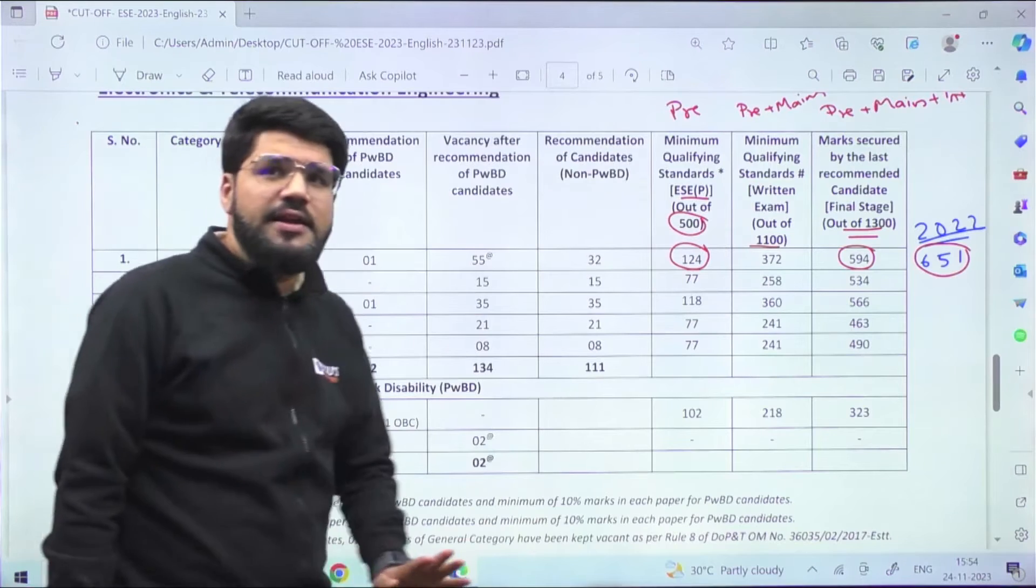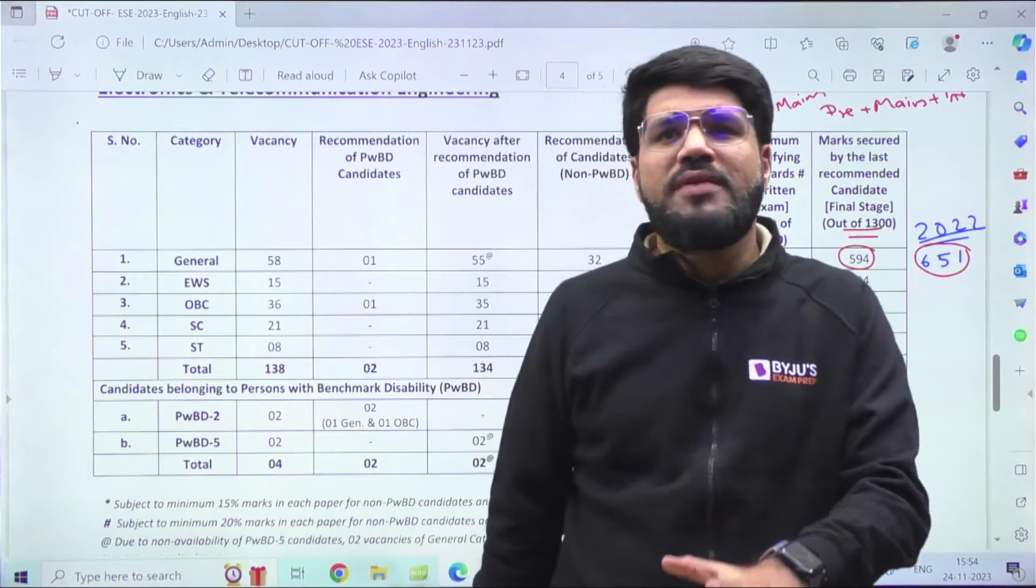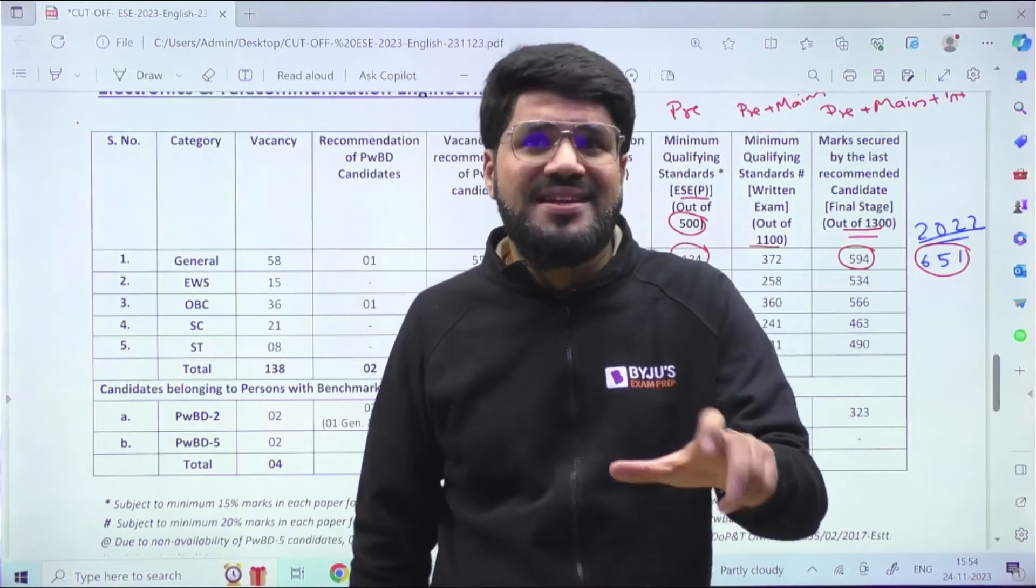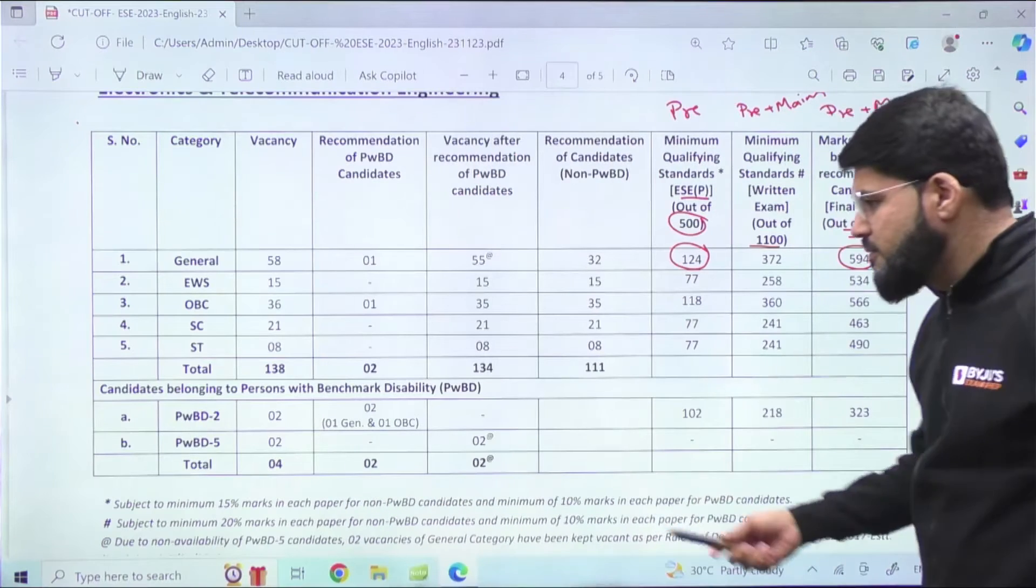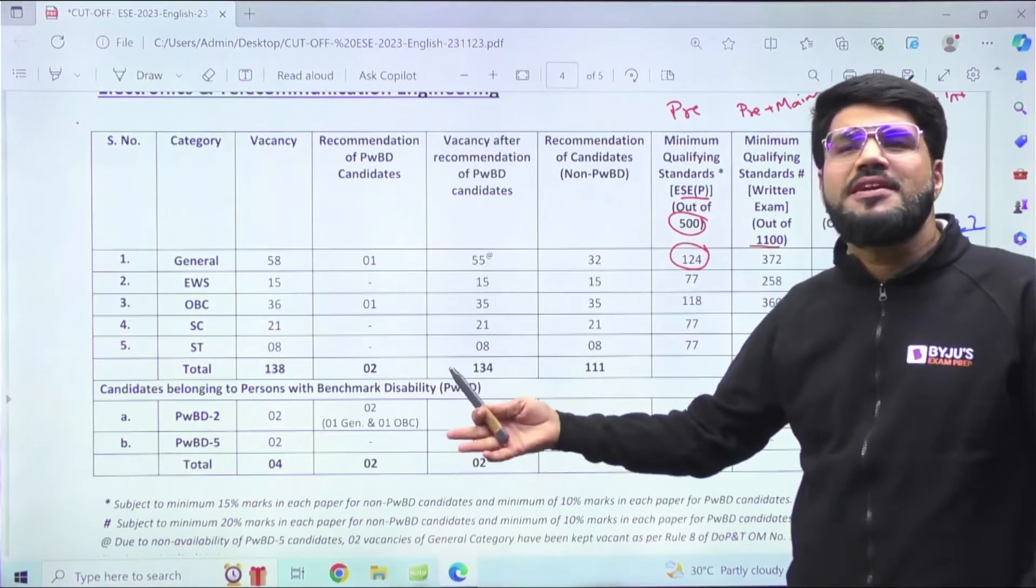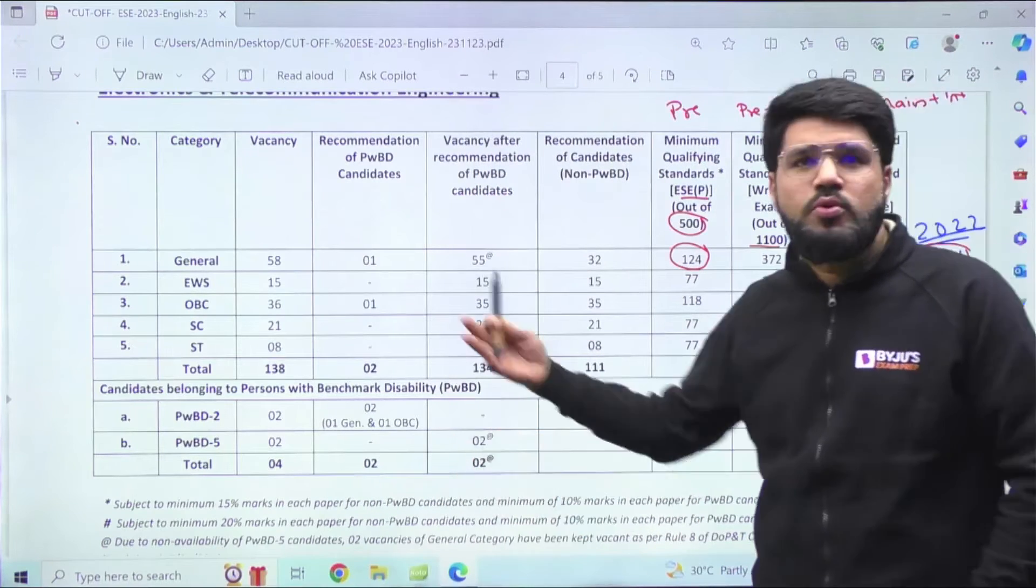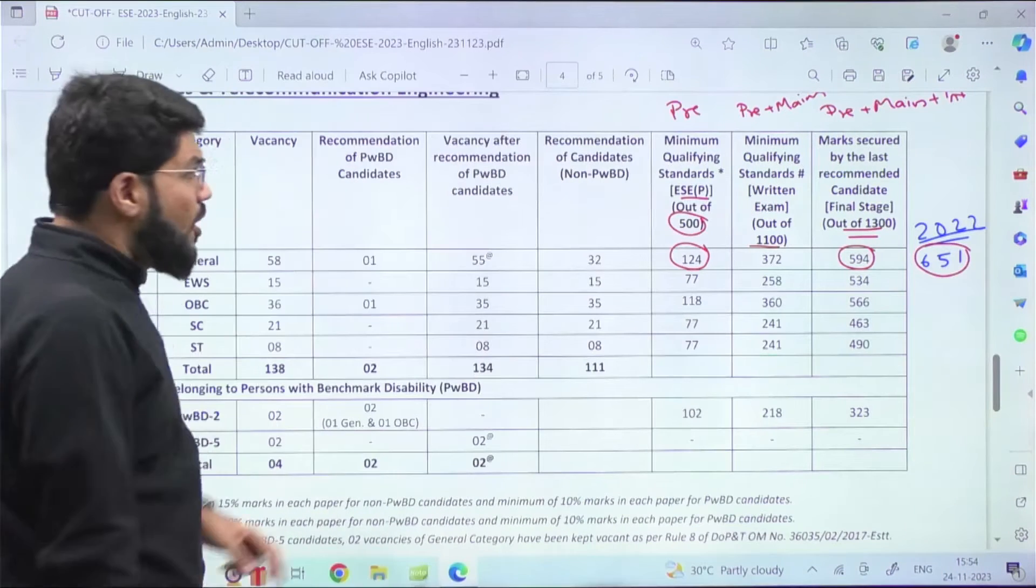This just gives you an indication that you have to be prepared about paper one also, the non-technical paper. 15 percent weightage means about 30 out of 200, so it's just 30 marks.